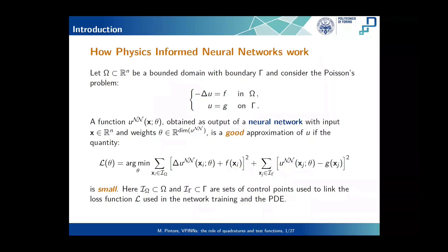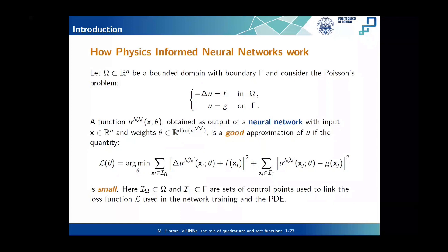Just a brief introduction for those of you who don't know what physics-informed neural networks are. In practice, they are neural networks that are trained to approximate solutions of partial differential equations. To give you an example, consider a simple case: this is a Poisson problem with Dirichlet boundary conditions. The exact solution is U. We want to compute a function U_NN, the output of a neural network, whose inputs are the spatial coordinates of the domain.